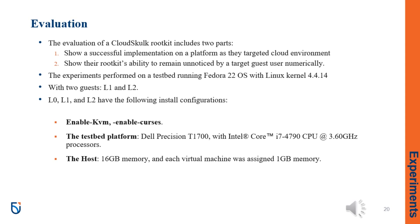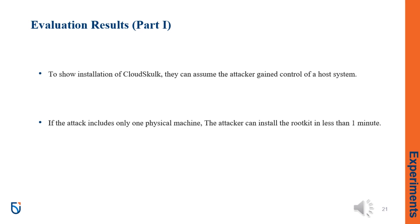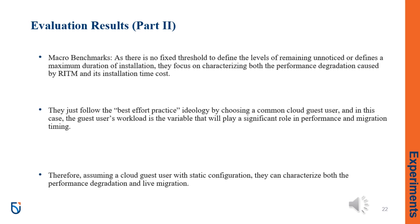Hello, I'm Hamid. The evaluation of the CloudSkulk rootkit includes two parts: showing a successful implementation on a platform as the targeted cloud environment, and showing the rootkit's ability to remain unnoticed by the target guest user. The experiments were performed on a testbed running Fedora 22 OS with Linux kernel 4.4.14, with two guests, L1 and L2. To show installation of CloudSkulk, they assume the attacker gained control of the host system. If the attack includes only one physical machine, the attacker can install the rootkit in less than one minute. They focus on characterizing both the performance degradation caused by the rootkit and its installation time cost.